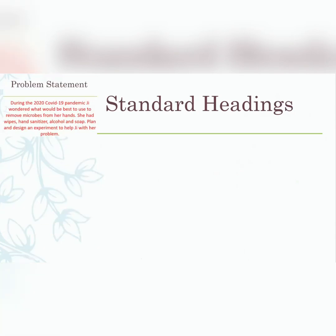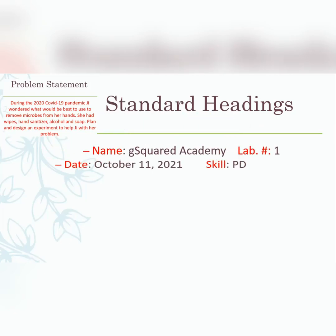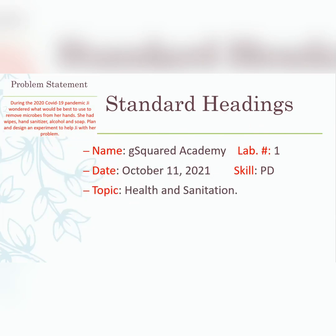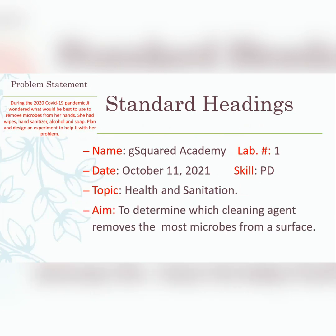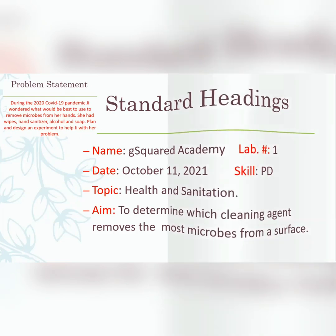Of course, you'll need your standard headings when writing up your lab. The name is G Squared Academy, lab number one, the date, and the skill are all there. The topic is health and sanitation — a number of topics could work, but health and sanitation fits this problem well. The aim is to determine which cleaning agent removes the most microbes from a surface.